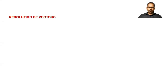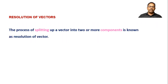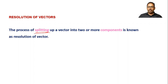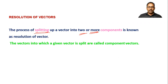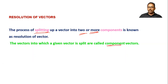Resolution of vectors. Resolution means the process of splitting up a vector into two or more components. Splitting means separation of one vector into two or more components — it is called resolution. The vector into which a given vector is split is called a component. If a vector is split up into two, then the two are called components of the original vector.